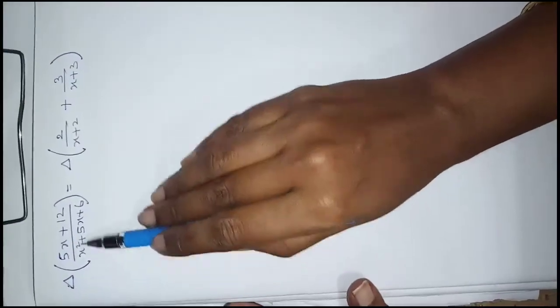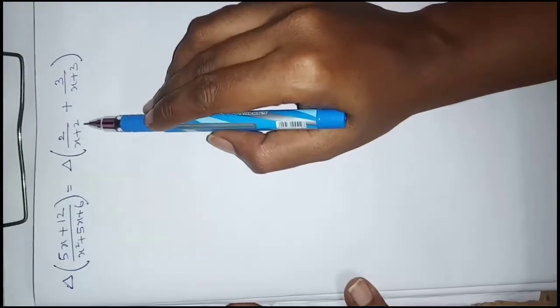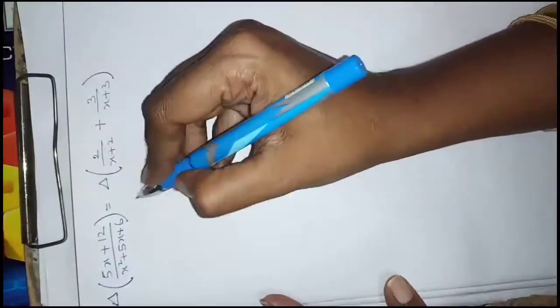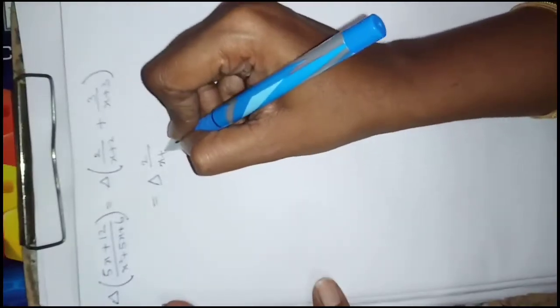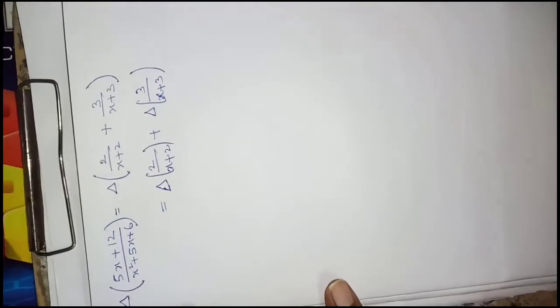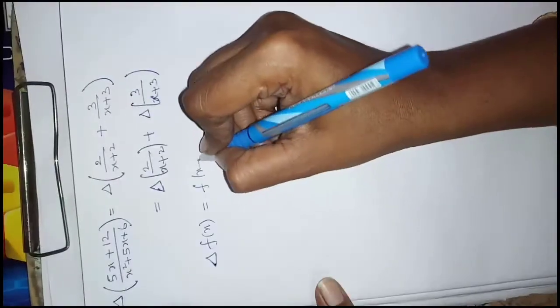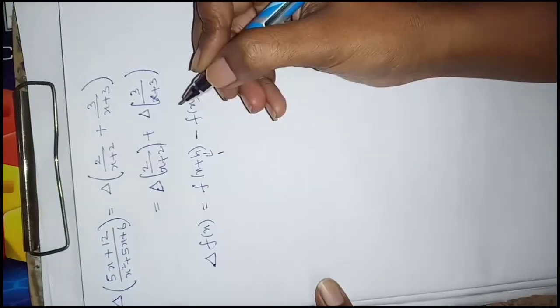Now we apply the delta operator. Delta of 2 divided by (x + 2) plus delta of 3 divided by (x + 3). Recall that delta f(x) means f(x + h) minus f(x), where h = 1.